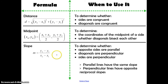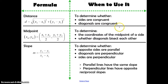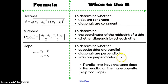So here we have three formulas: distance, midpoint, and slope, and we've used them all year long. Here we're going to talk about when to use each one. Use distance to determine whether sides are congruent or diagonals are congruent. Use the midpoint formula to determine the coordinates of the midpoint of a side and whether diagonals bisect each other. Use the slope formula to determine whether opposite sides are parallel, diagonals are perpendicular, and sides are perpendicular. Remember, parallel lines have the same slope, while perpendicular lines have opposite reciprocal slopes.